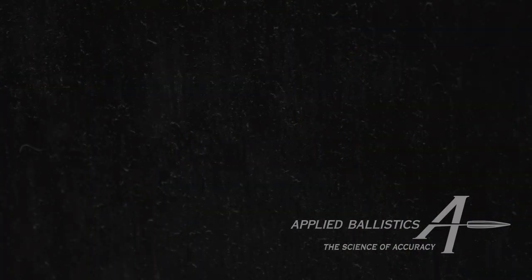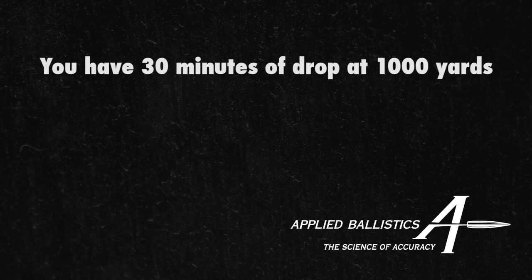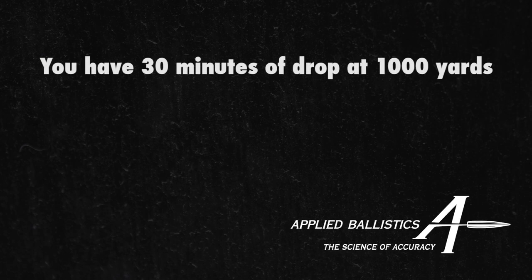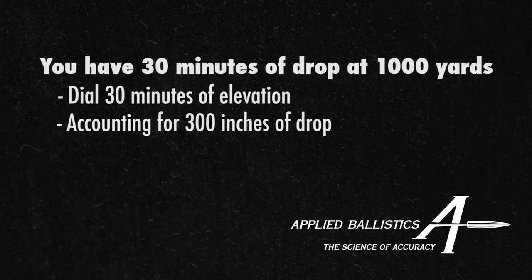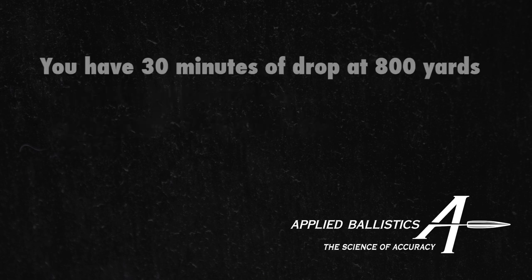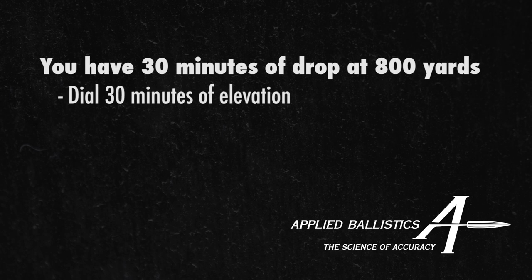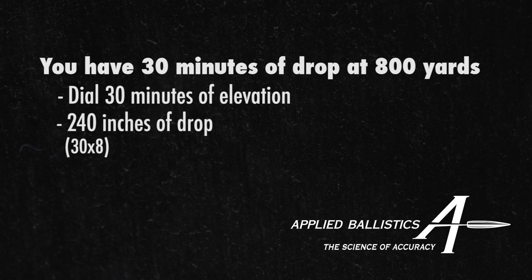At a thousand yards, it's 10 inches. So for example, let's say you have 30 minutes of drop at a thousand yards — you're going to dial 30 minutes of elevation on your scope. And what that's actually accounting for is 300 inches of drop, because it's 30 times 10 at a thousand yards. If you did 30 minutes at 800 yards, then that would be 240 inches of drop. So the same number of minutes means a different amount of inches depending on your range.